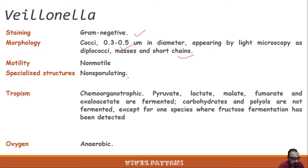Veillonella is chemo-organotrophic, in which pyruvate, lactate, malate, fumarate, and oxaloacetate are fermented. Carbohydrates and polyols are not fermented except for one species where fructose fermentation has been detected.